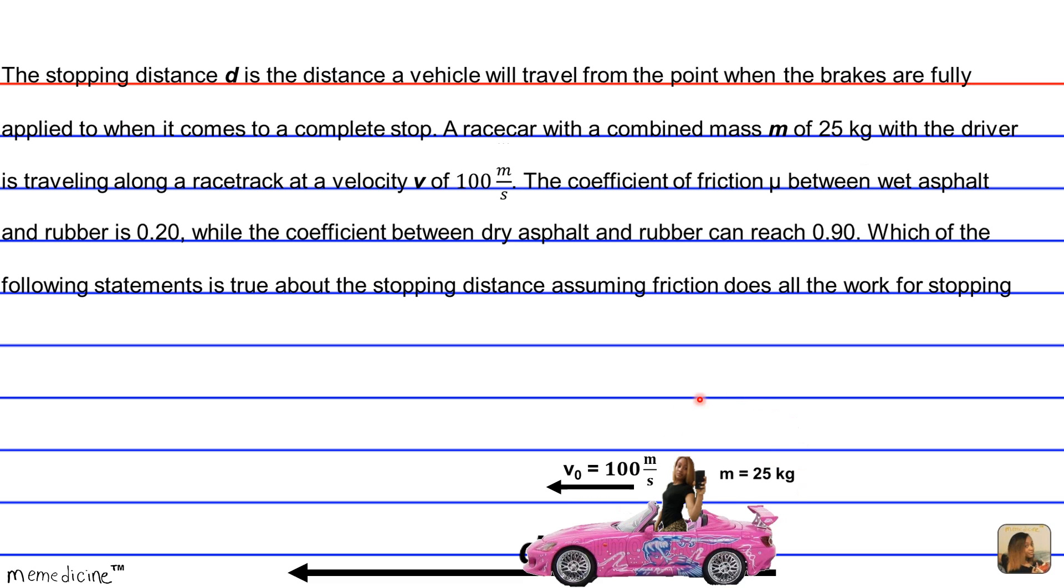Because it's traveling initially at 100 m/s, the car has an initial kinetic energy, but no final kinetic energy when it comes to a complete stop.